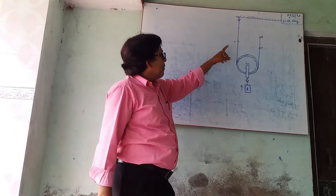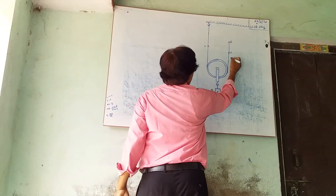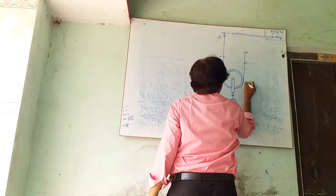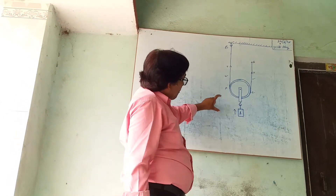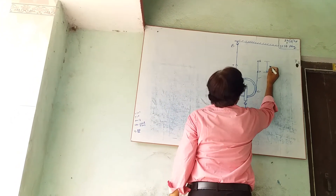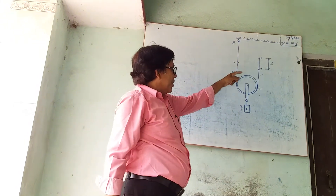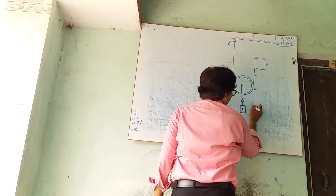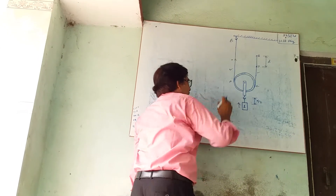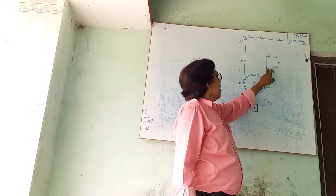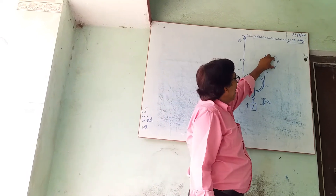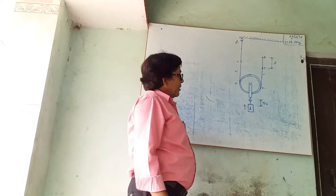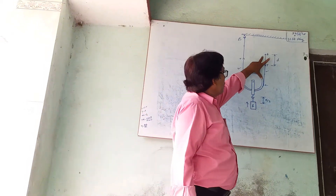We see that this pulley is supported by two segments of a string: A, B, and C, E. If the effort moves through a distance D, the load will move through a distance D by 2 in the upward direction. This distance can be divided into two parts: one part in segment C, E and the other part in A, B, because this pulley is supported by the two segments of a string.